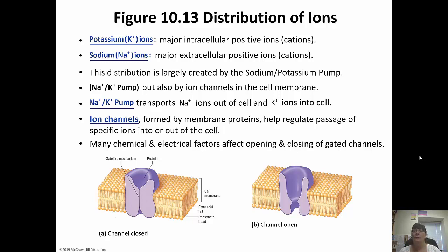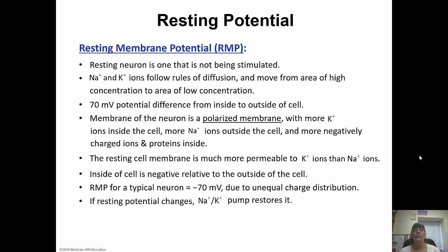Ion channels are formed by membrane proteins and help regulate the passage of ions in and out of the cell. There are a lot of factors that affect their opening and closing. Resting membrane potential is the potential the membrane has when the neuron is not being stimulated — it's at rest. The sodium and potassium ions follow the normal rules of diffusion, moving down their concentration gradients from high to low concentration. The difference between the inside and outside of the cell measures about 70 millivolts.